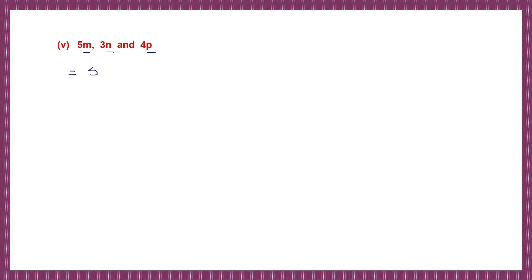Question 5: here we have 5m, 3n, and 4p. They're all unlike terms, I cannot add them. So my answer is 5m plus 3n plus 4p. That's my answer.